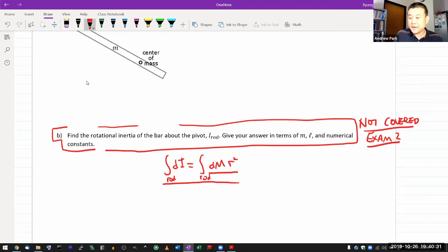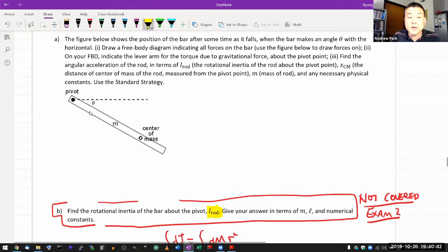So for the purpose of this review session, let's say that the rotational inertia of the rod is given. One easy way I can give that to you is by giving you a uniform rod. If I were to give you a uniform rod, then the pivot is at the end. You can look it up from a table of rotational inertia.